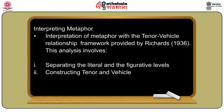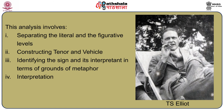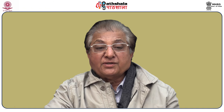We come now to interpreting the metaphor. Leech builds up an elaborate model for the interpretation of metaphor with the tenor and vehicle relationship framework provided by Richards in 1936. According to this framework, the analysis of a metaphor follows: number one, separate the literal from the figurative levels; two, construct the tenor and the vehicle; three, identify the sign and its interpretant in terms of the ground of metaphor; four, interpretation. The basic premise is that literal and figurative meaning are two ends of the same scale, but the literal is basic and the figurative is derived.